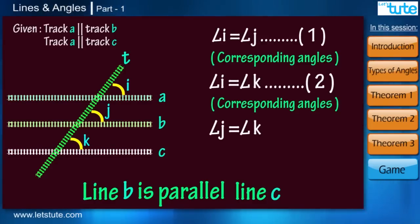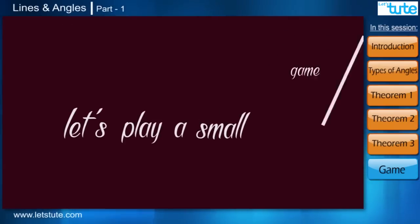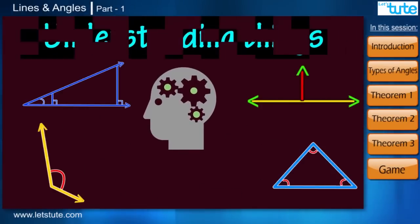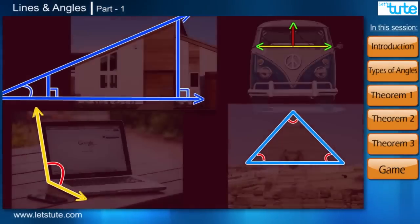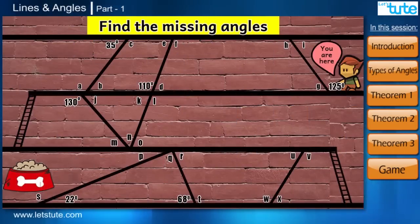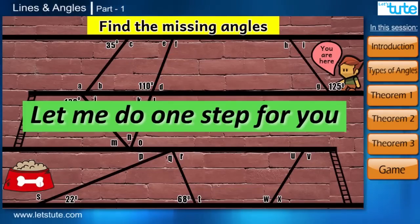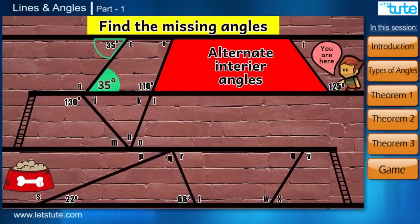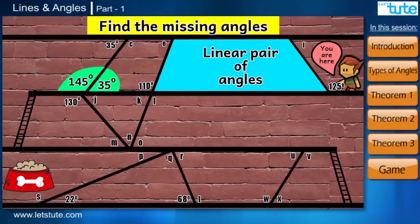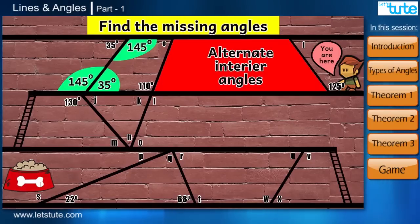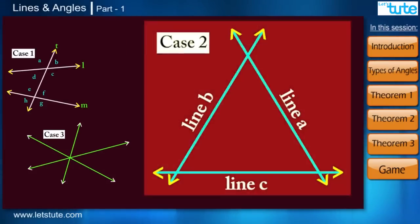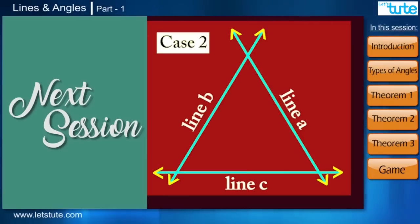Here we are done with the first session of the chapter Lines and Angles. For a recap, let's play a small maze game which will help you understand things and logically apply them in real-life situations. At the end of the maze is the food for your pet — the faster you finish, the sooner your pet will get the meal, or else he will eat your meal! Hopefully you have enjoyed this session. Before we end it, we left one criteria still to be understood — for that, wait for our next session.